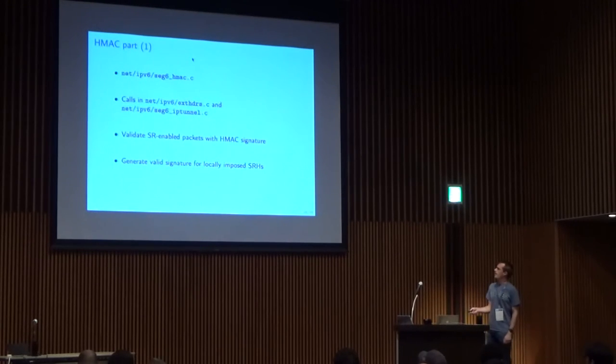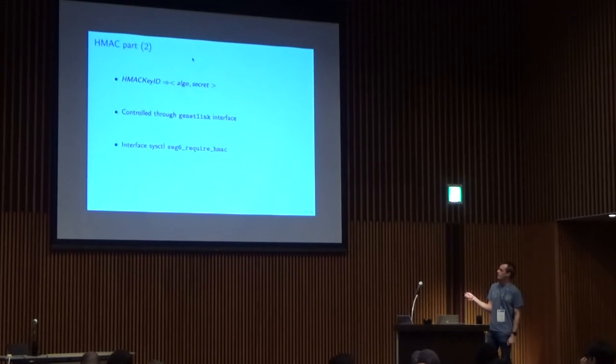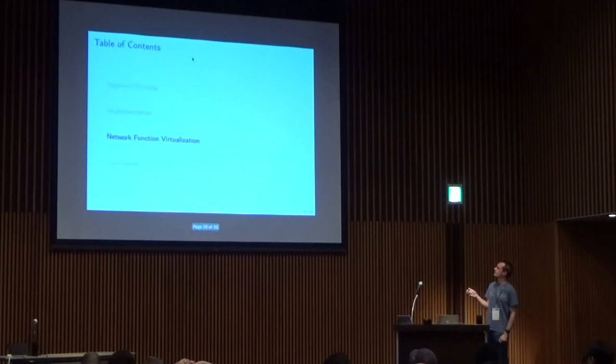The HMAC is implemented and its purpose is to generate valid signatures for SLRH that we impose on packets and to verify the signature of incoming packets which have the HMAC TLV enabled. We choose to implement the HMAC key ID as follows: it maps the value to a hashing algorithm and a secret. We can also add an expiration time that might be useful for management purposes. This is controlled through a generic netlink interface. We have a per-interface parameter that says to either simply ignore any HMAC TLV you receive, verify the HMAC TLV if it is present, or enforce valid HMAC for every incoming packet.